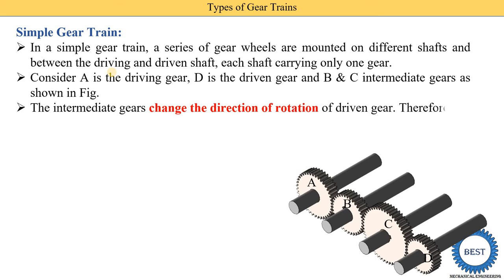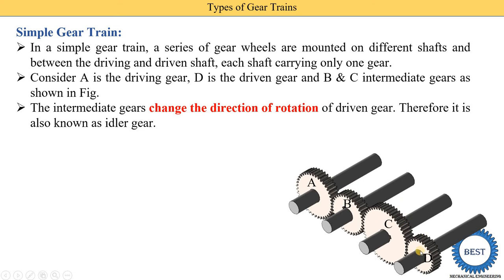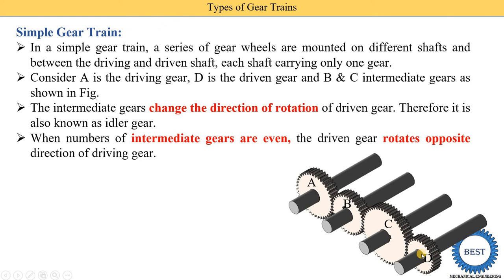The intermediate gears — gear B and C — change the direction of rotation of the driven gear. The driving gear and driven gear rotation direction depends on the number of intermediate gears. These intermediate gears change the direction of the driven gear, that's why they are also called idler gears. The direction of the driven gear depends on whether the odd or even number of intermediate gears are present.